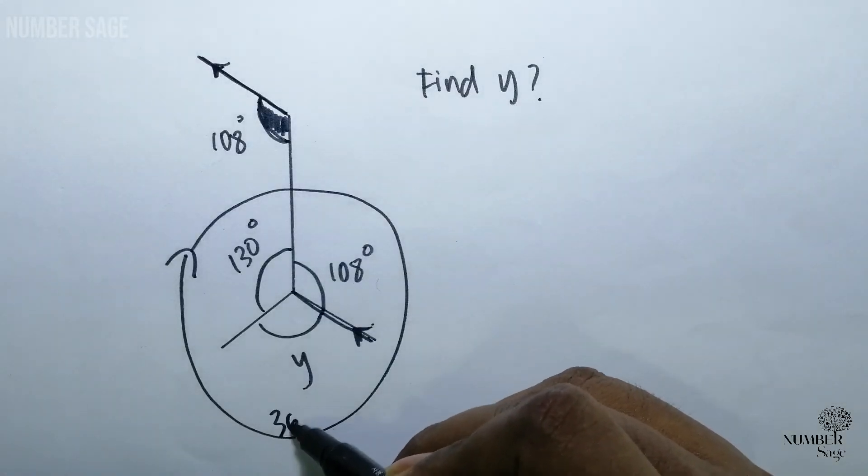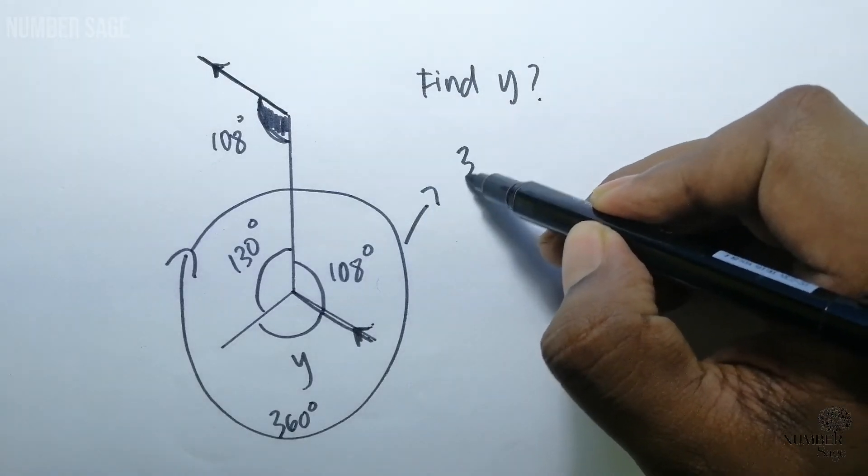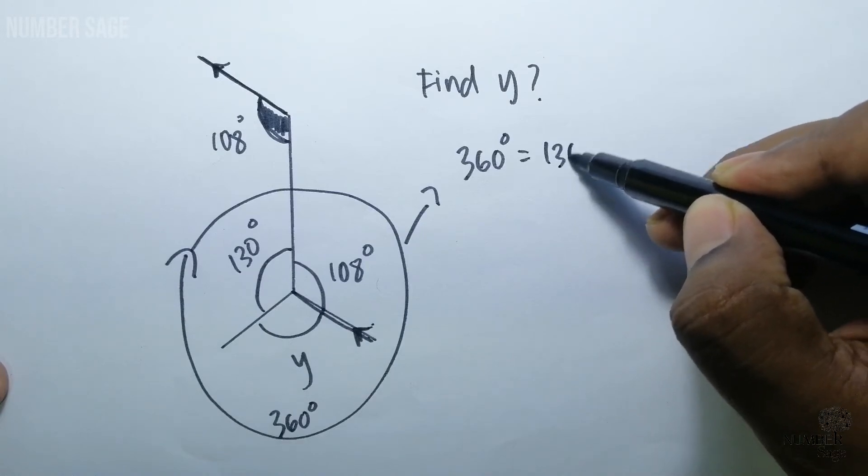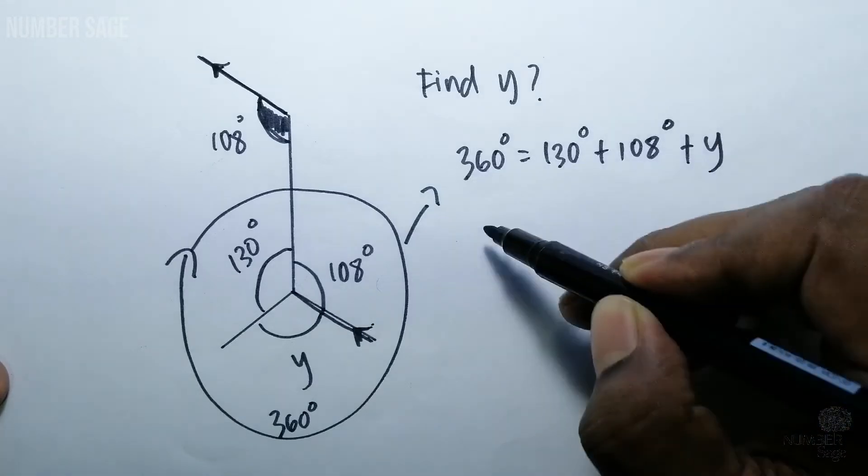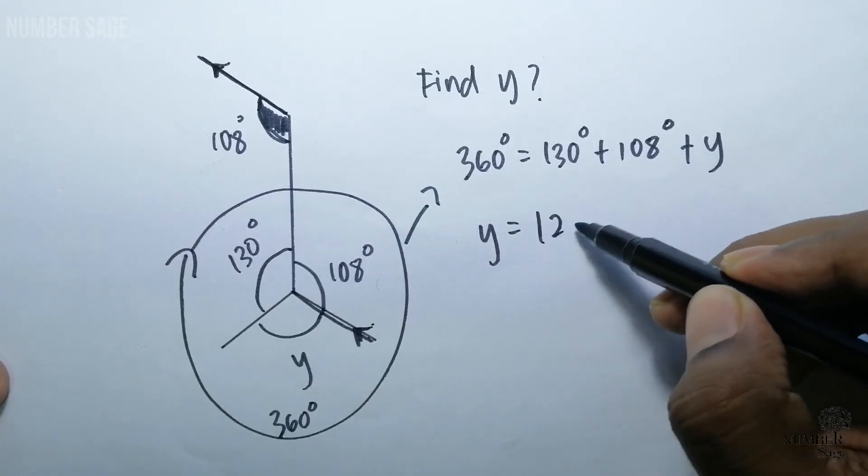From here we can derive 360 degrees is equivalent to 130 plus 108 plus y. Further solving will give us y is equal to 122 degrees.